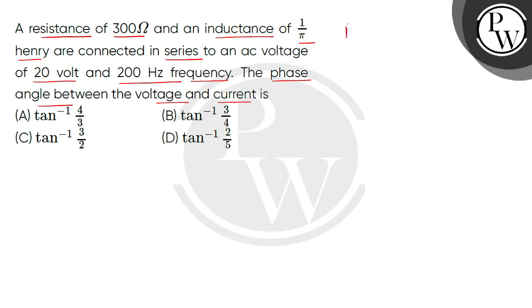So children, given we have a resistance which is 300 ohm and an inductance which is 1 by π SI unit. Now we have AC voltage given and that is ERMS is 20 volts, frequency given 200 hertz. We need to find the voltage and current phase angle.